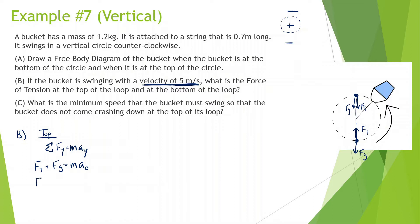We're looking for the force of tension. Force of gravity is going to be 12. The mass is 1.2. Centripetal acceleration is going to be v squared, which is 5 squared, divided by r, and r is going to be the length of the string, 0.7. So: 5 squared times 1.2 divided by 0.7 minus 12, and we get 30.86 N.